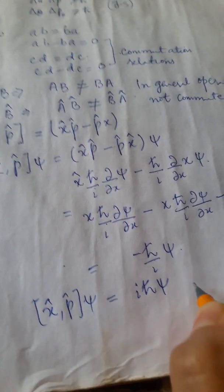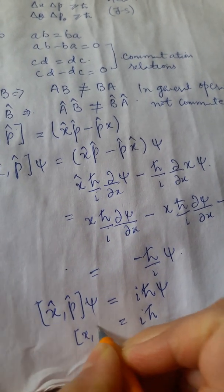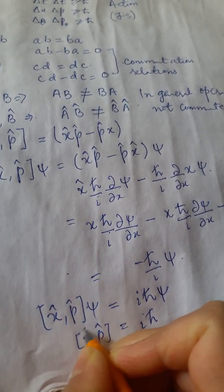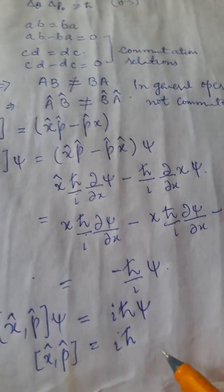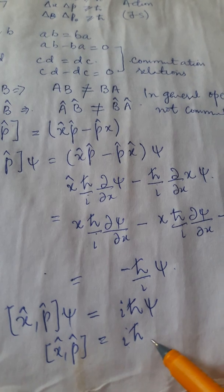Now, psi and psi goes we are left with i h cross only that is commutator of x and p is equal to i h cross only. So since we are getting an iota term at the end this reflects the uncertainty in this product.